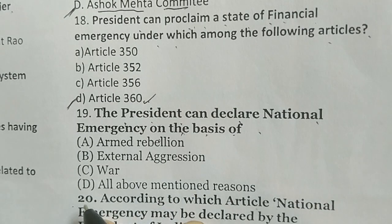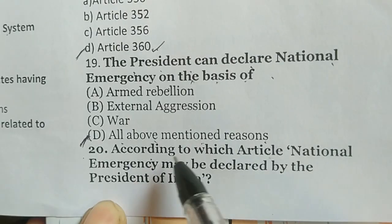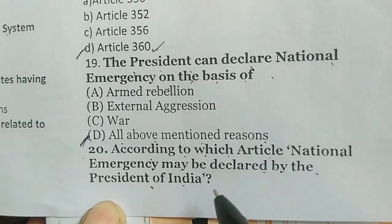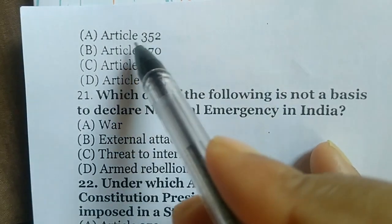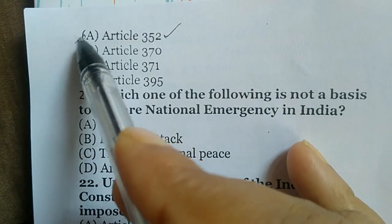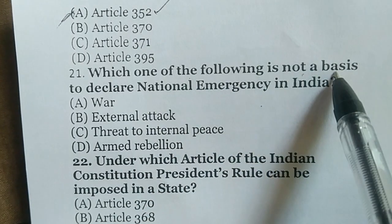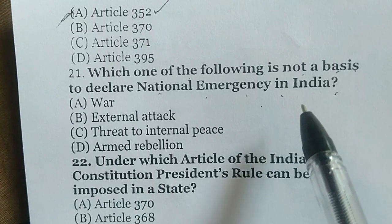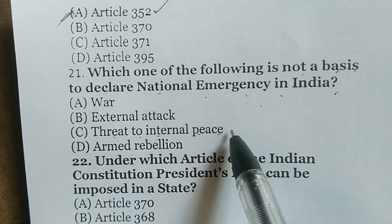On what basis can the President declare a national emergency? The correct answer is option D — all of the above mentioned reasons. According to which article may a national emergency be declared by the President of India? The correct answer is Article 352 — option A. Which one of the following is not a basis to declare national emergency in India? The correct answer is option C — threat to internal peace.